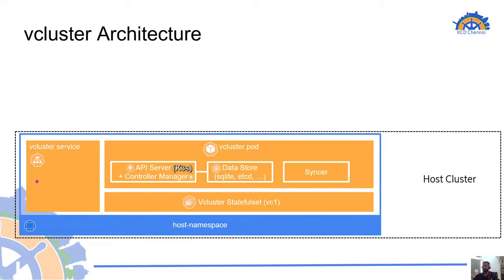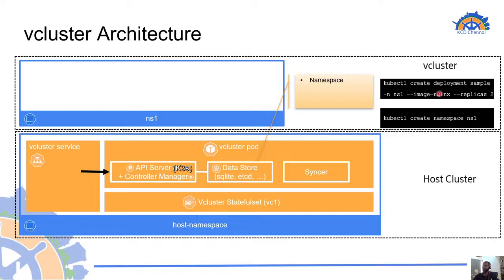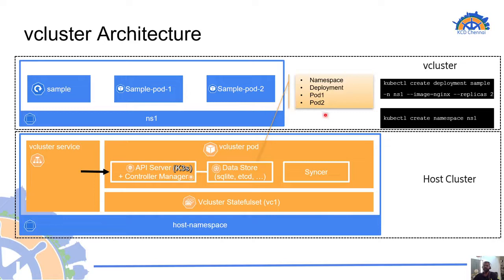Inside the vcluster we ran a command to create a namespace. A namespace got created and it creates an entry in the vcluster's data store. vcluster uses SQLite by default, a lightweight data store, and by default uses the K3s API server which supports SQLite as a storage backend. We could also use our own SQL database or deploy a fully fledged etcd in separate pods. We created a deployment called sample with image nginx and replicas set to 2. This spawns a deployment entry in the data store. The controller manager inside the control plane watches the new entry and creates two pods — two more objects written into the data store. Now we have four objects: namespace, deployment, and two pods owned by this deployment.